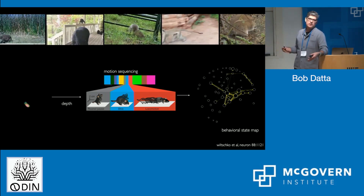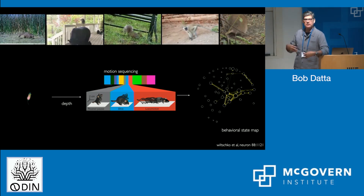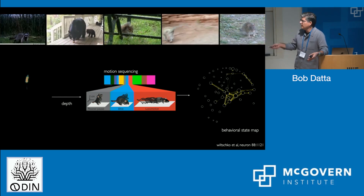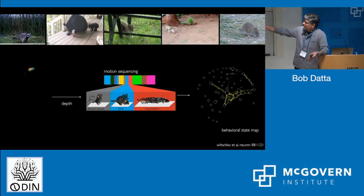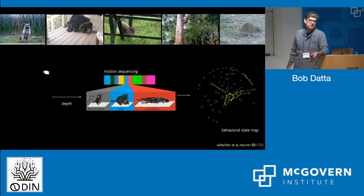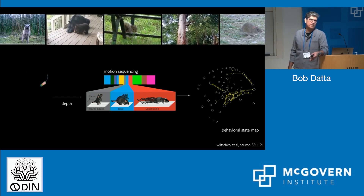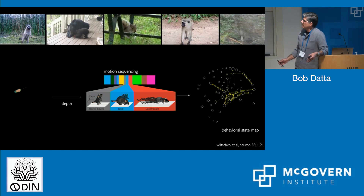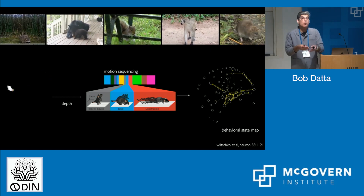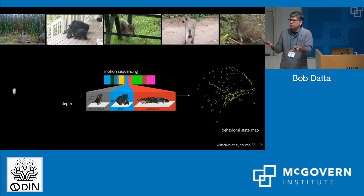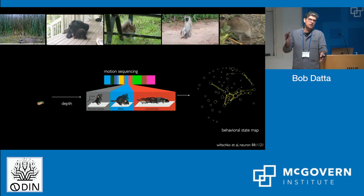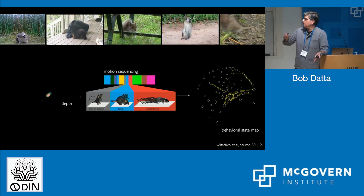For a given experiment, MoSeq will tell us the identity of these syllables, how many they are, and of course the order in which they occur. That allows us to synthesize all of that information into a behavioral statement that effectively captures the moment-to-moment behavioral choices that animals make as they confront the natural world.